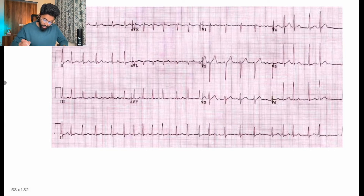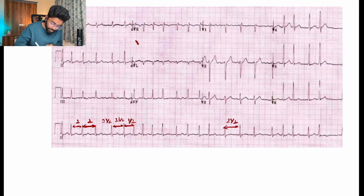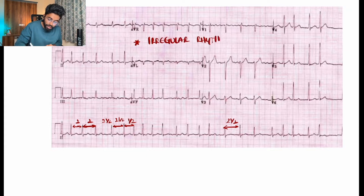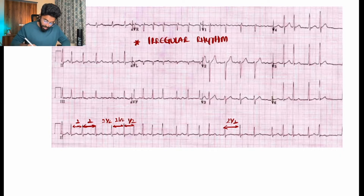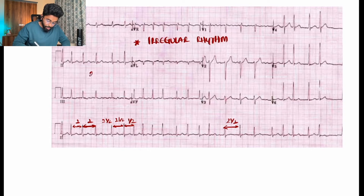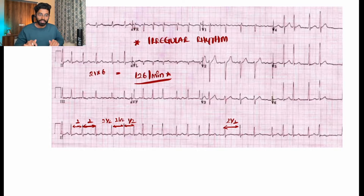Now for an irregular rhythm ECG, we use the third method: counting the number of R waves and multiplying by 6. Here we count 21 R waves, so 21 multiplied by 6 equals 126 beats per minute — that is the heart rate for this irregular rhythm ECG.